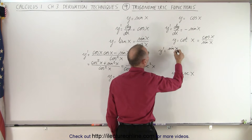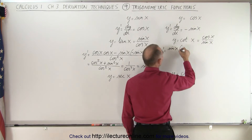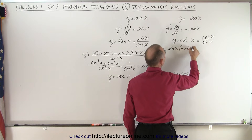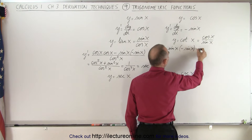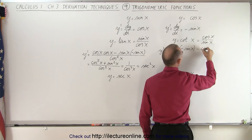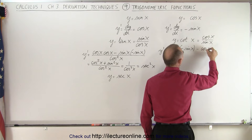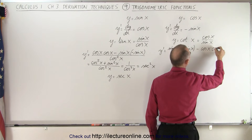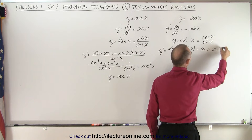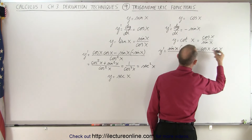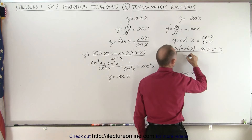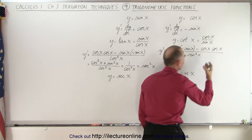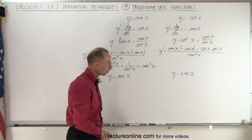times the derivative of the numerator, which is the negative sine of x, minus the numerator, which is the cosine of x, times the derivative of the sine, which is the cosine of x, all divided by the denominator squared, which is the sine squared of x.